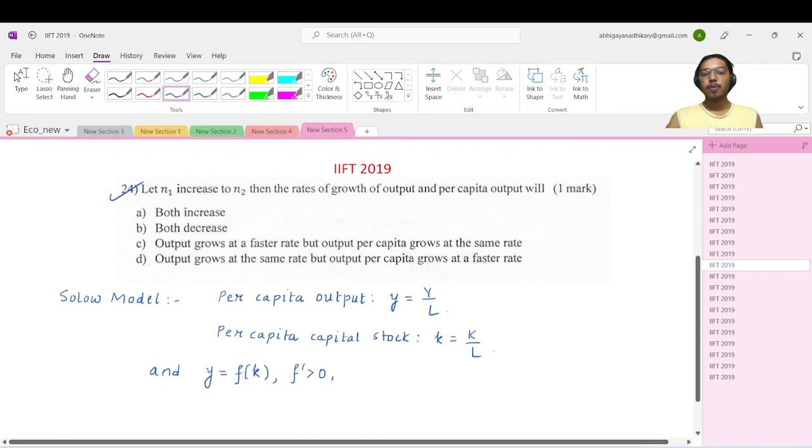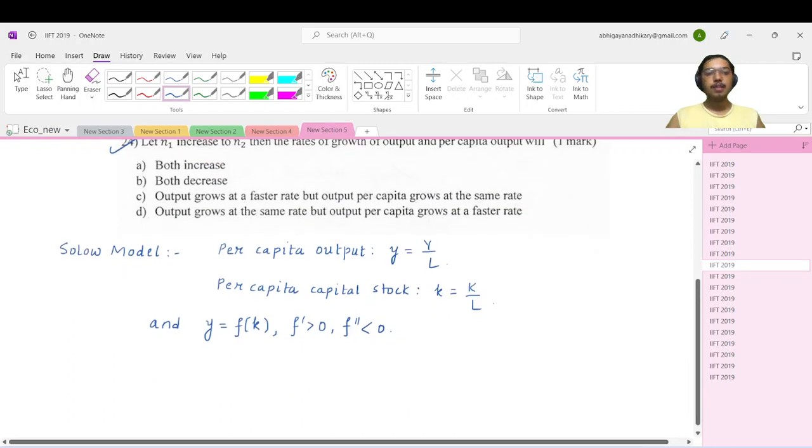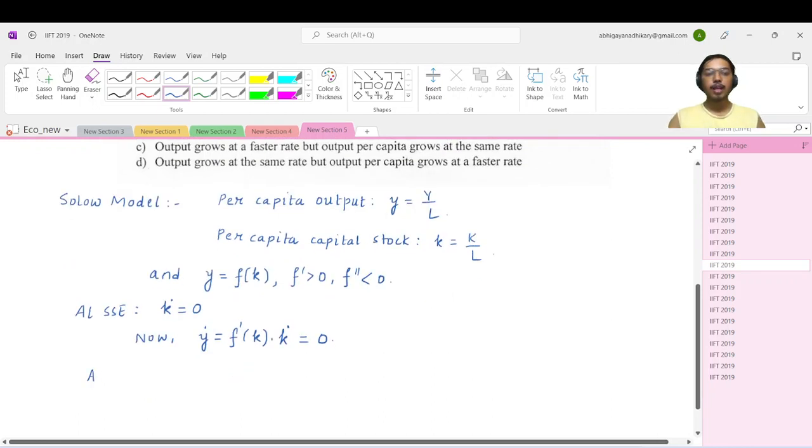Where f prime is positive and f double prime is negative. Now at steady state equilibrium, k dot equals zero. If you look at the expression for small y, what is y dot? It will be f prime of k times k dot, which is zero. That means at steady state equilibrium, k dot is zero and y dot is zero.